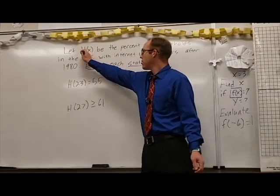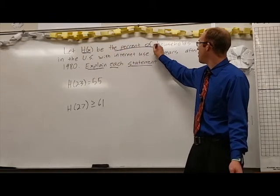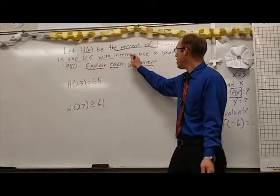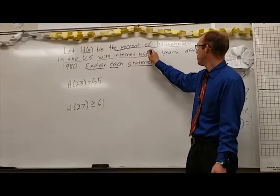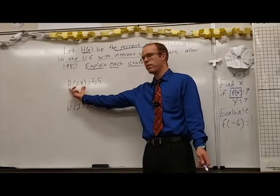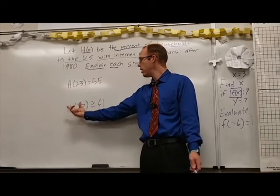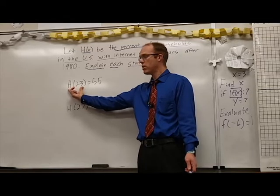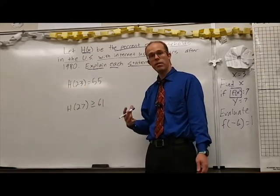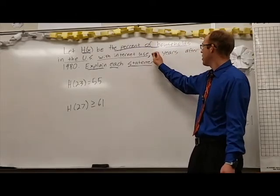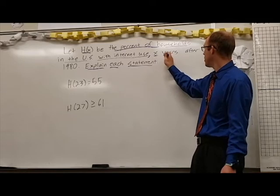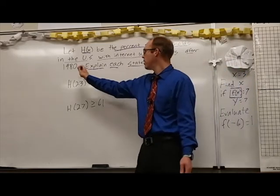H of x is defined. It is the percent of households in the United States with internet use. So anytime we see h of x or a variation of it, h of 23, h of 27, this talks about the percent of households that have access to the internet. This next phrase talks about x. X is the years after 1980.